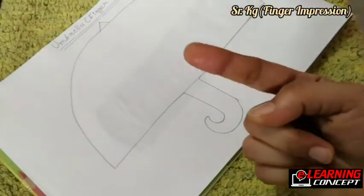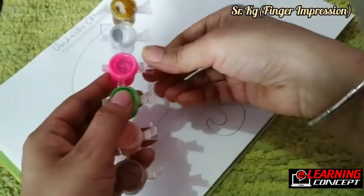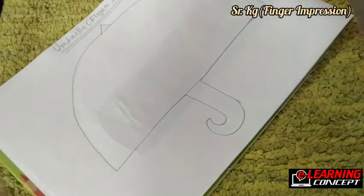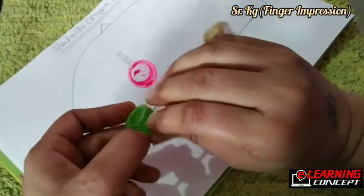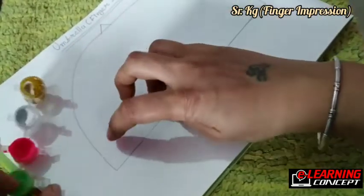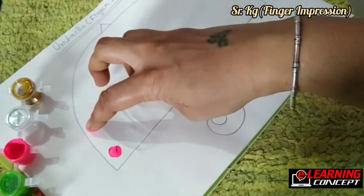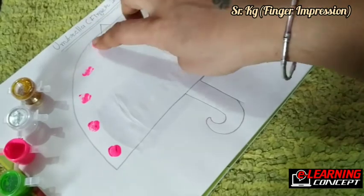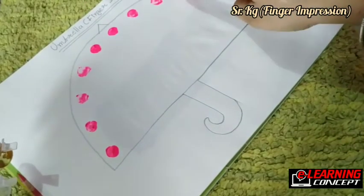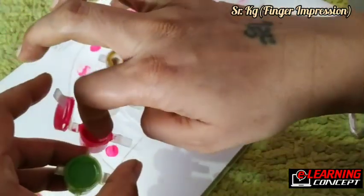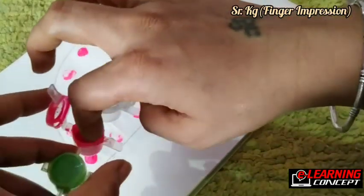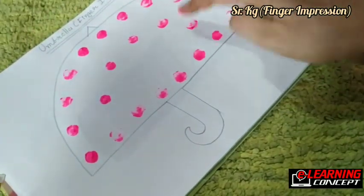Now take your finger and bring watercolor. Open pink color, then dip your finger in the color and make impression on the page. Once again dip it and print on page like this. Dip and tap.